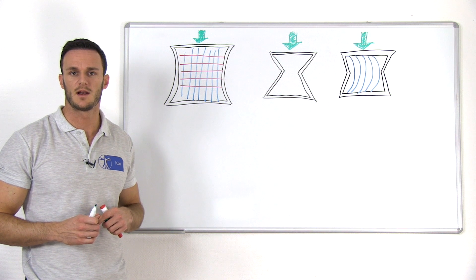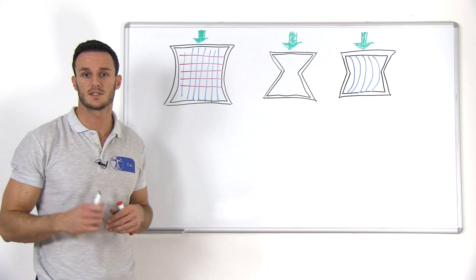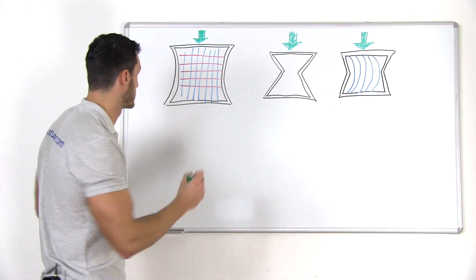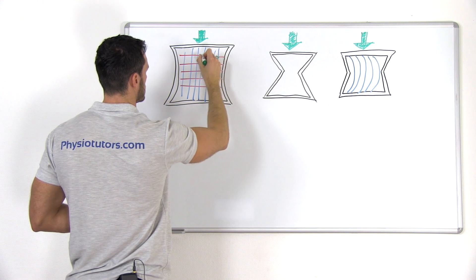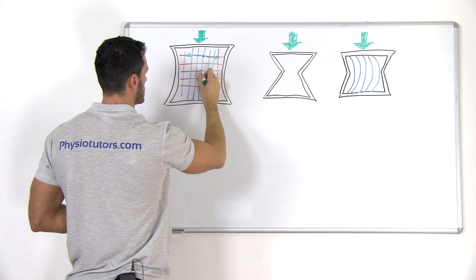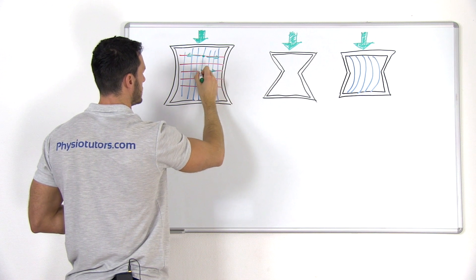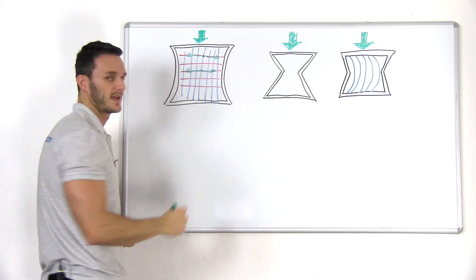Any applied load is first borne by the vertical trabeculae and consequently this force is transferred to transverse tension. So first we have a longitudinal force and this is converted into transverse tension.